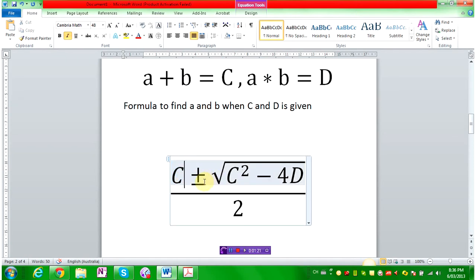And it's C plus or minus C squared minus 4D. Oh, sorry. Plus or minus root of C squared minus 4D divided by 2.